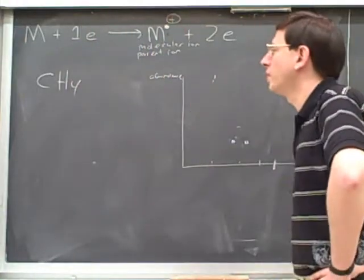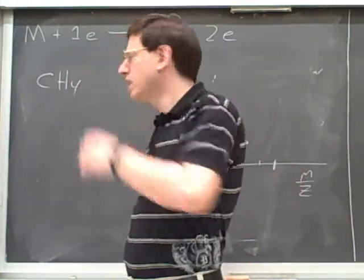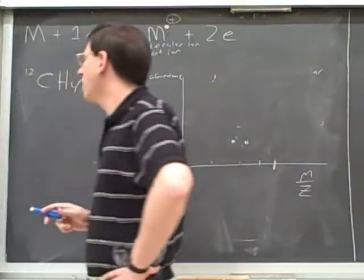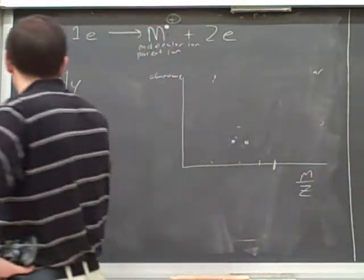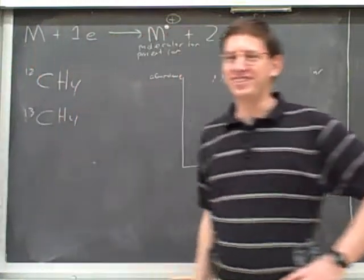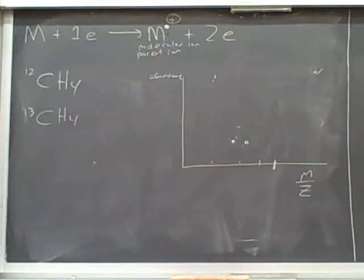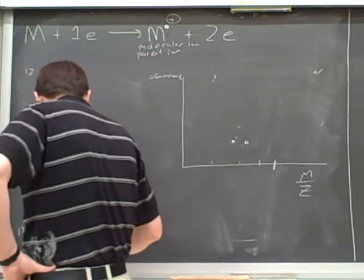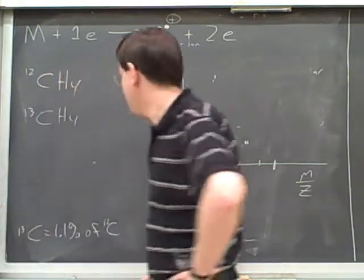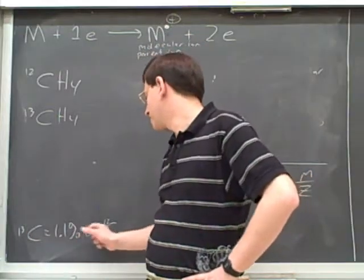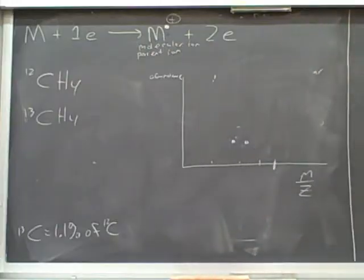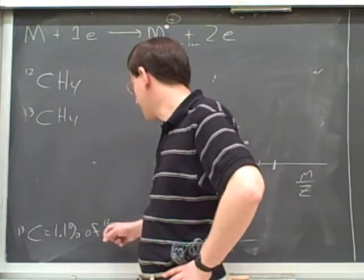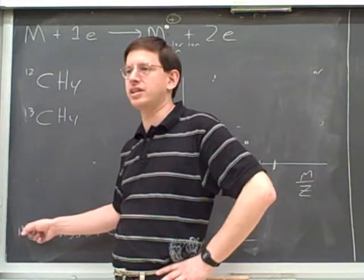Now we can start looking at some complications. One complication is isotopes. The most common isotope of carbon is carbon-12. Most carbons are carbon-12s. However, there's a small amount of carbons that are carbon-13s. 1.1% of all carbons are carbon-13s. Roughly speaking, the amount of carbon-13 is 1.1% of the amount of carbon-12. Remember that isotopes have the same number of protons, but different numbers of neutrons. All carbons have 6 protons, but carbon-12 has 6 neutrons, and carbon-13 has 7 neutrons.